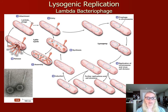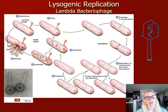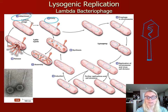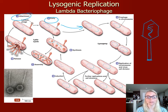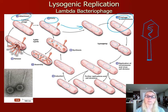Now let's look at lysogenic replication. The example we'll use is the lambda bacteriophage. It looks very similar — it has its capsid and DNA inside, but it just has the sheath without the tail fibers and end plates like the T4 bacteriophage. It starts off very similarly with attachment and entry, but then diverges. Instead of proceeding to synthesis and assembly, it goes into almost a dormant stage. In the lysogenic replication cycle, the bacteriophage's genome gets incorporated into the bacterial chromosome, and once it does that, we call it a prophage — the name for the viral genome now incorporated as part of the bacterial chromosome.